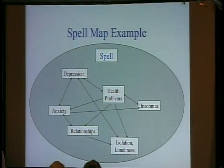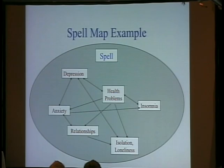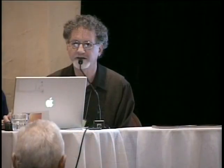A spell map might look something like this where I've got depression, anxiety, relationship things over the course of my life, health problems, insomnia — sometimes there's a cause and effect relationship, sometimes two things feed each other. Each one of those arrows, if I can break that connection, means the whole thing doesn't have to continue in the way it typically does, and I have a new pattern. I'm rewriting my life.